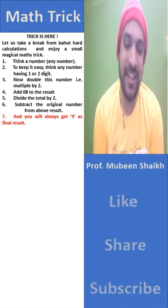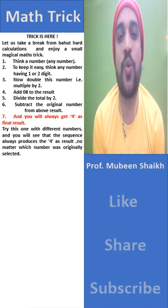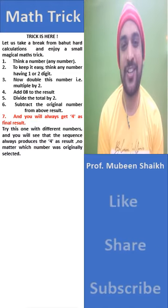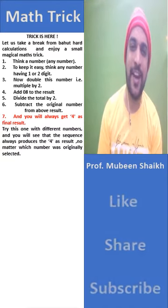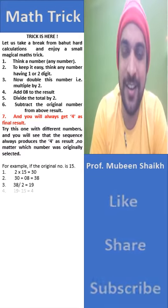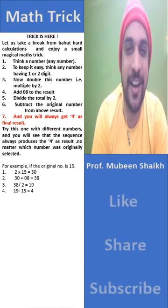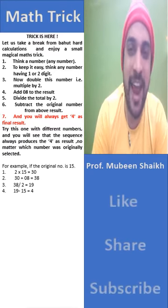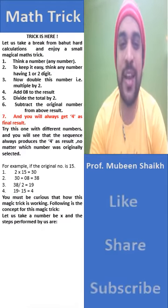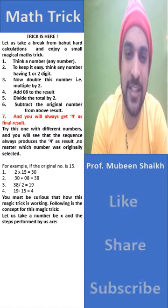Yes, am I right? Try this with different numbers and you will see that this sequence always produces 4 as a result, no matter which number was originally selected. For example, if the original number is 15: 2 × 15 = 30, 30 + 8 = 38, 38 ÷ 2 = 19, and 19 − 15 = 4. So you must be curious how this magic trick is working.